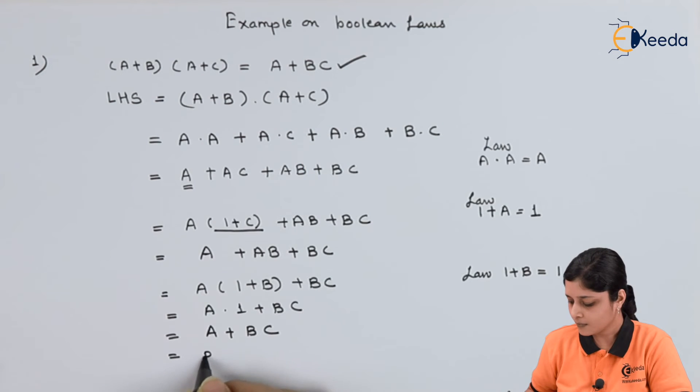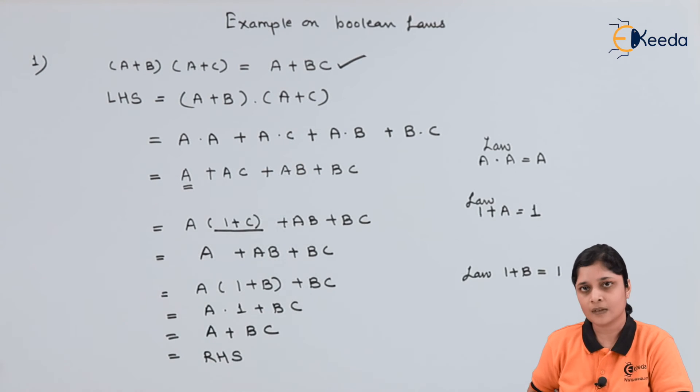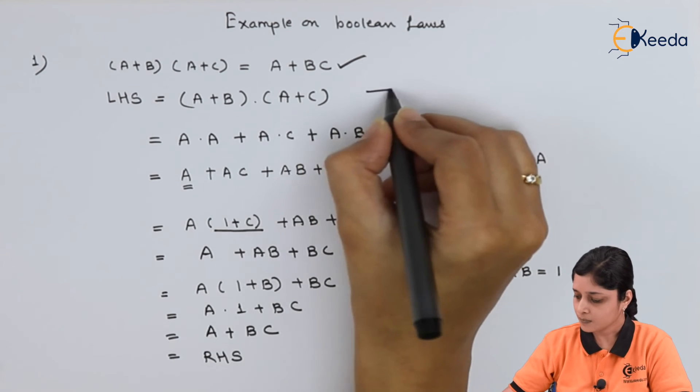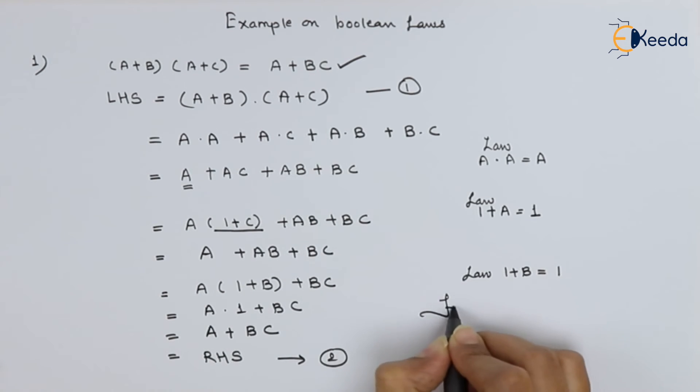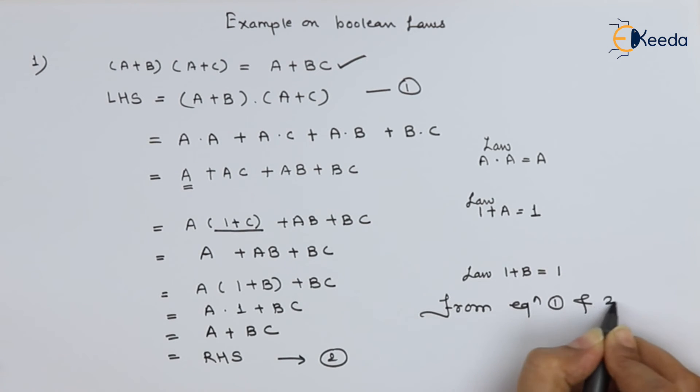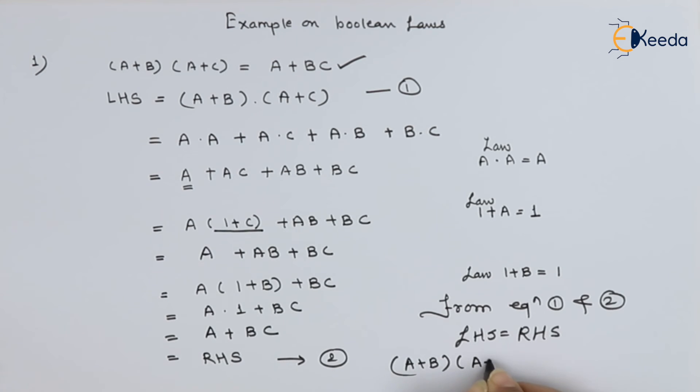You can see here RHS side. So you can write from equation 1 and 2: LHS equals to RHS, that is (A+B)(A+C) equals to A+BC.